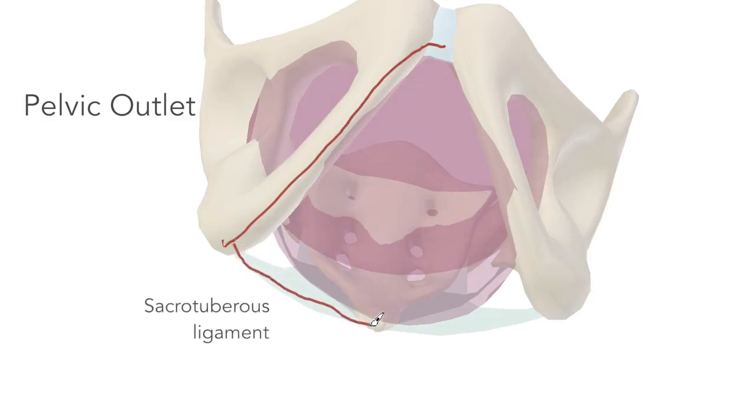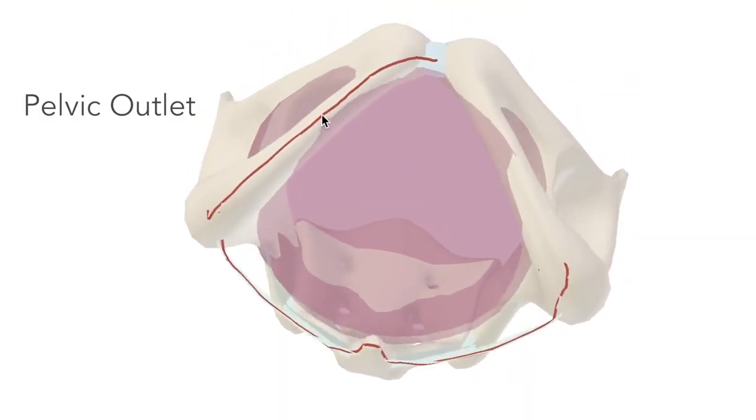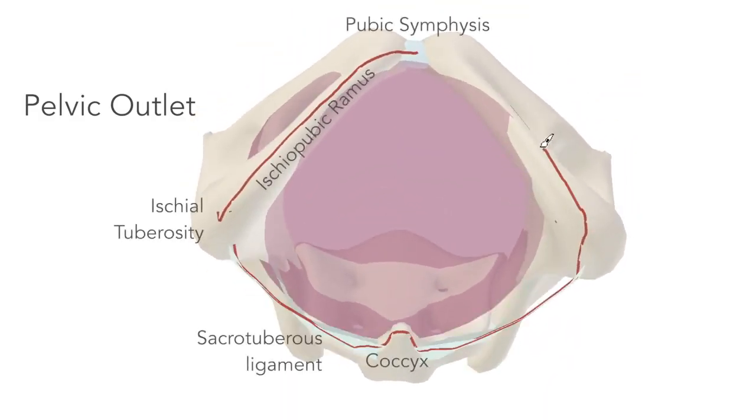Sacrotuberous ligament down the back, coccyx, the sacrotuberous ligament, now the ischial tuberosity, left ischiopubic ramus, and back to the pubic symphysis. The shape of the pelvic outlet varies quite a lot between men and women or male and female sex.